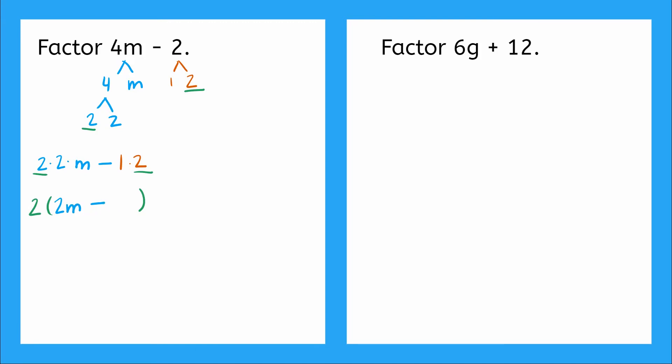And then minus my second term, I took out this 2. It's right here, but I'm still left with my 1. So this is my factored form of the expression 4m minus 2. It's 2 times 2m minus 1.